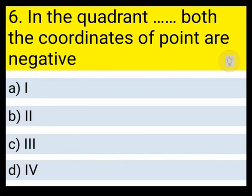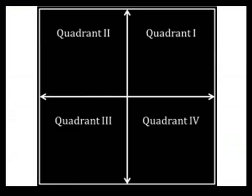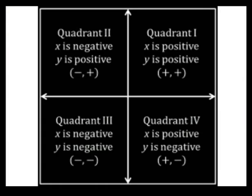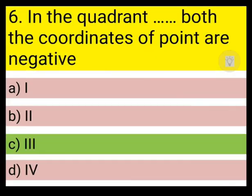Next question: in which quadrant are both coordinates of a point negative? First, second, third, or fourth? You can see that both negative coordinates are found in the third quadrant. Therefore, c is the correct answer.